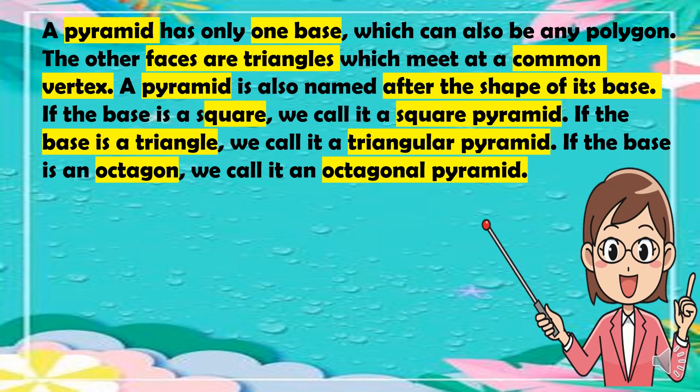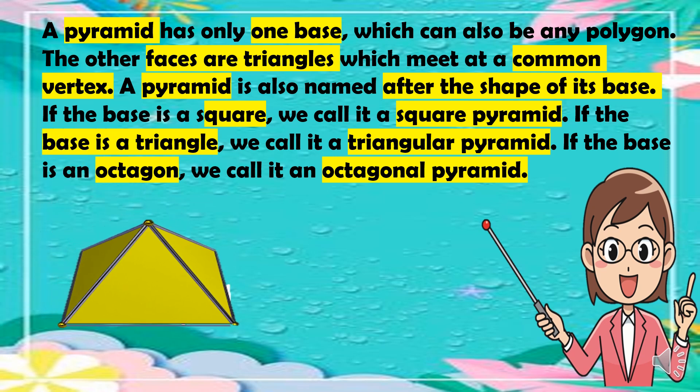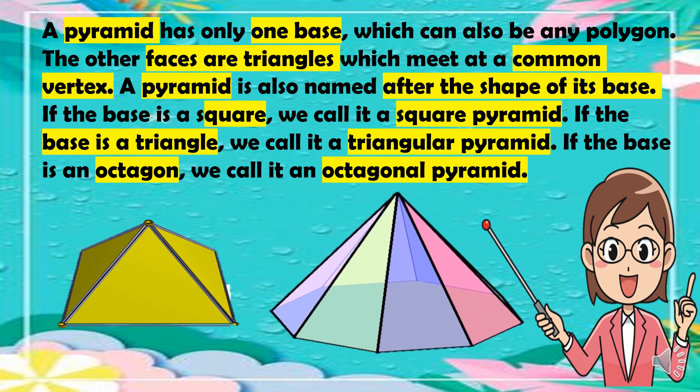A pyramid has only one base, which can also be any polygon, and the other faces are triangles that meet at a common vertex. A pyramid is also named after the shape of its base. If the base is a square, it is a square pyramid; if a triangle, a triangular pyramid; and if an octagon, an octagonal pyramid.